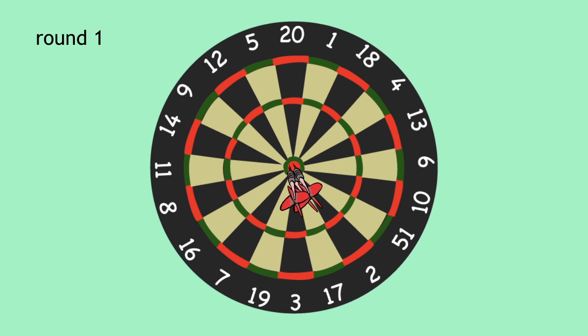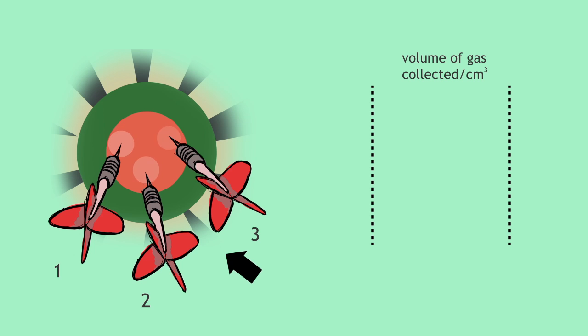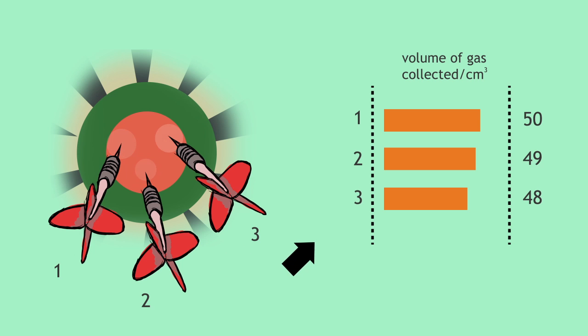Imagine you throw three darts in round one and they hit the dartboard like this. You also measure your volumes of gas. What do you notice about where each dart has landed and the volumes of gas collected? Pause, think and continue.